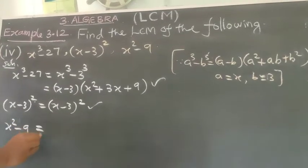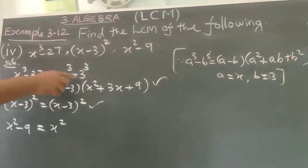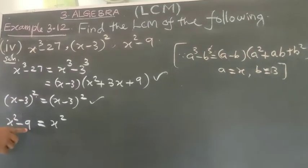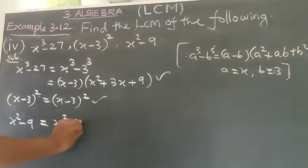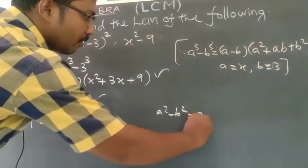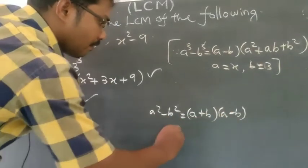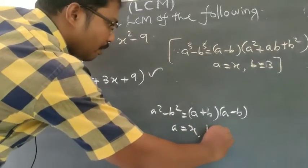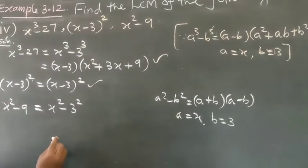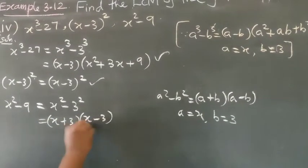Next, X squared minus 9. That is X squared minus 3 squared. Using the formula A squared minus B squared equals A plus B times A minus B, where A equals X and B equals 3, we get X plus 3 into X minus 3.